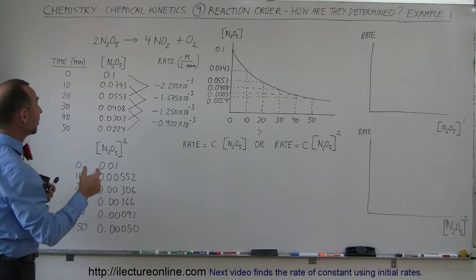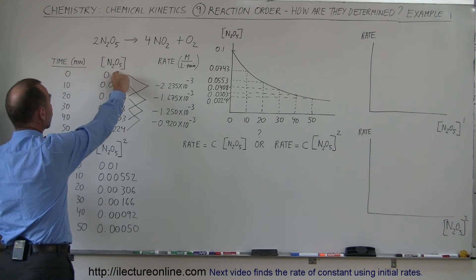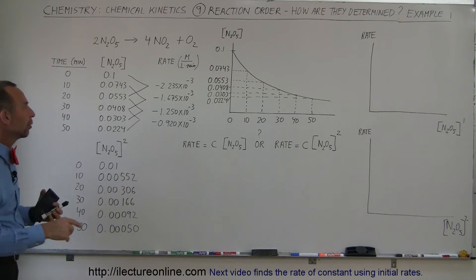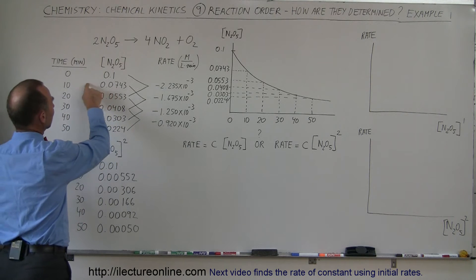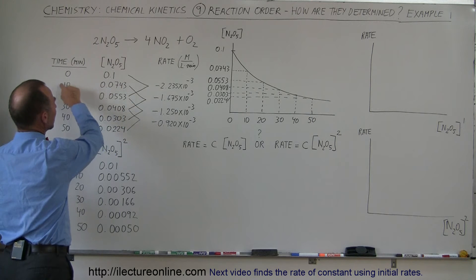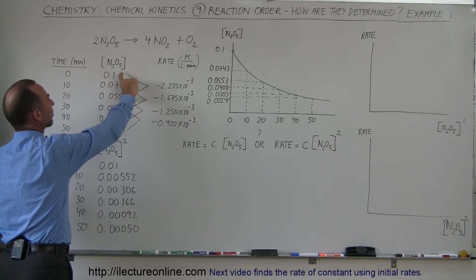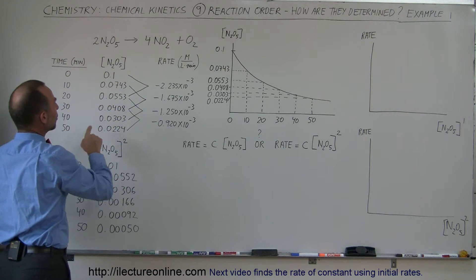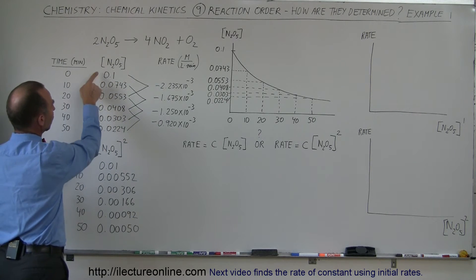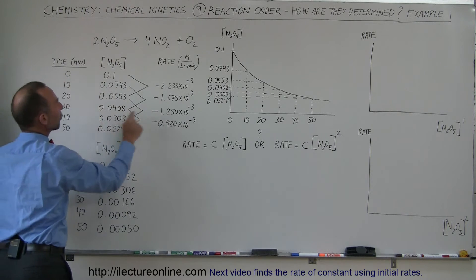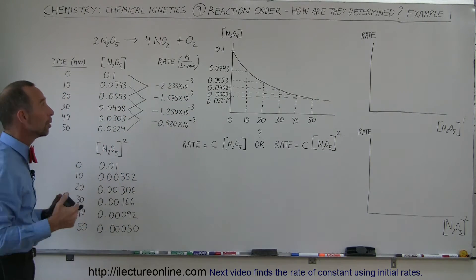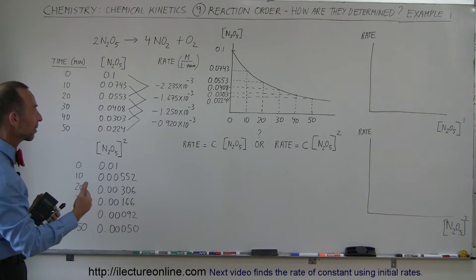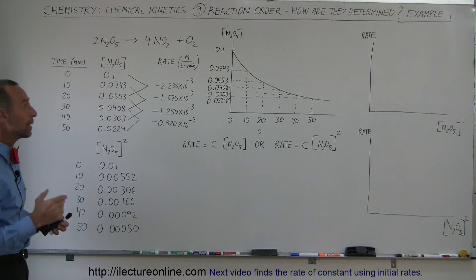The reaction rate is simply the change in concentration divided by the time elapsed. To get a better reading — as I explained in an earlier video — if you want to know the reaction rate at the point 10 minutes after the start, we take the difference in concentration between the surrounding points and divide it by 20 minutes. That gives us the rate in moles per liter per minute.